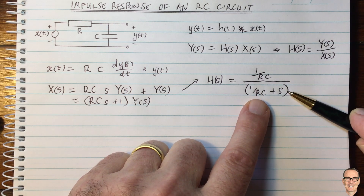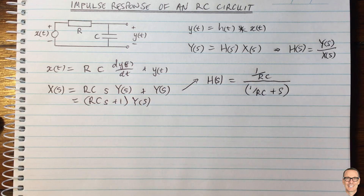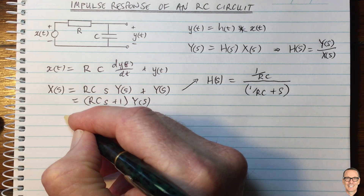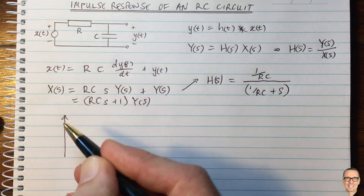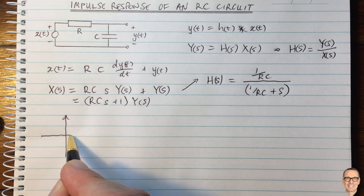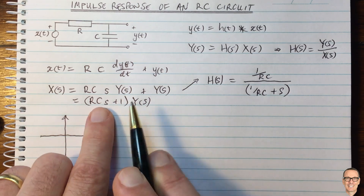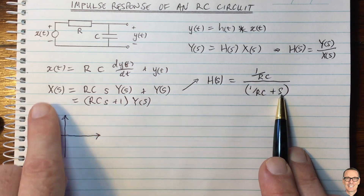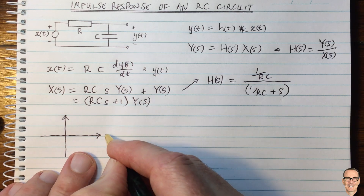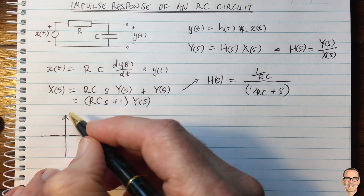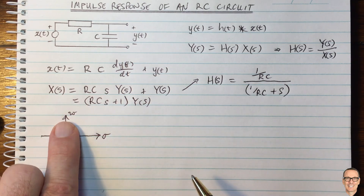Of course, we need to know about the region of convergence. Looking at the S-plane — the possible values of the Laplace parameter S — it is a complex number with a real value sigma and an imaginary value omega. So S equals sigma plus j·omega.